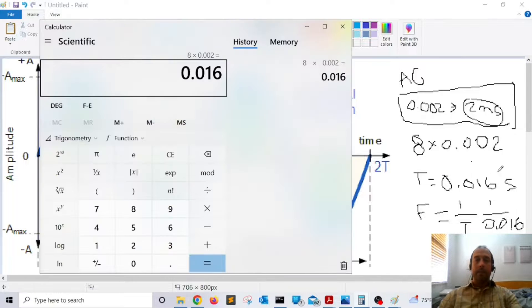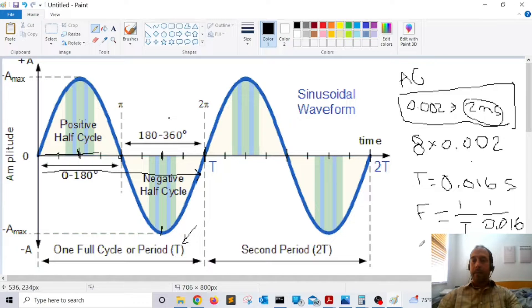All right, pull the calculator again. One over 0.016 and that is 62.5 hertz. All right, so this signal, the AC signal that you get on your power outlet, is approximately 60 hertz.